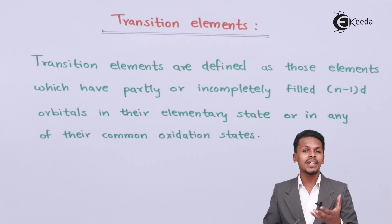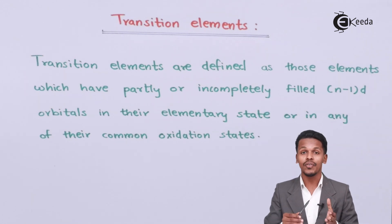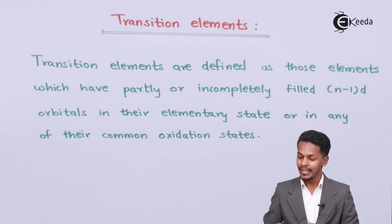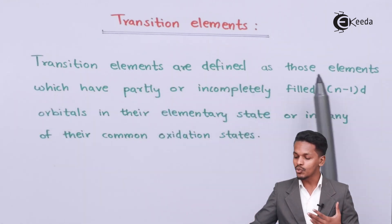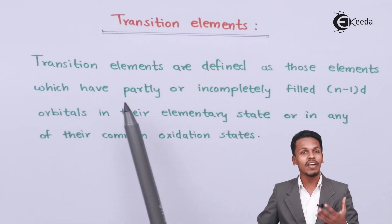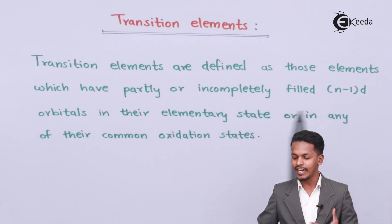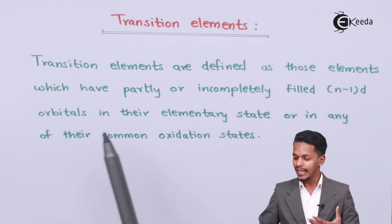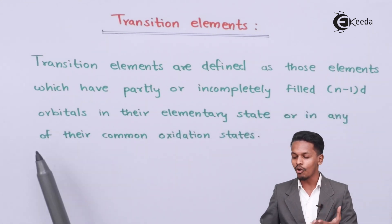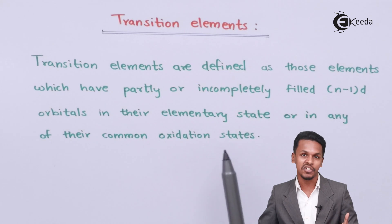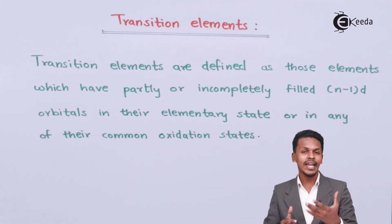D-block elements are also known as transition elements because of the following reason: transition elements are defined as those elements which have partly or incompletely filled (n-1)d orbitals in their elemental state or in any of their common oxidation states.